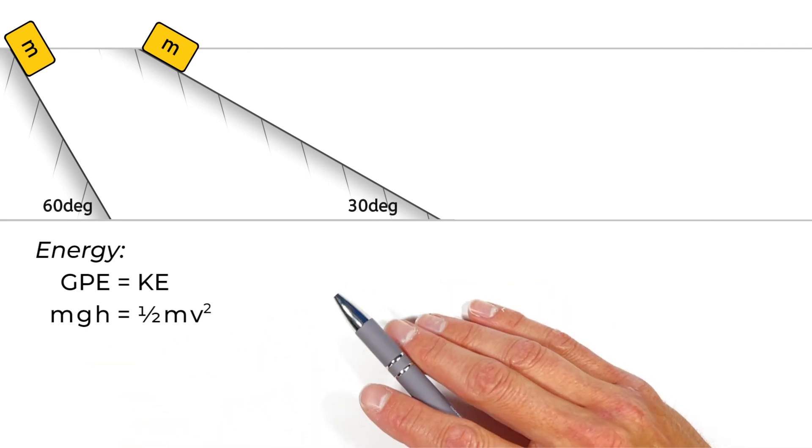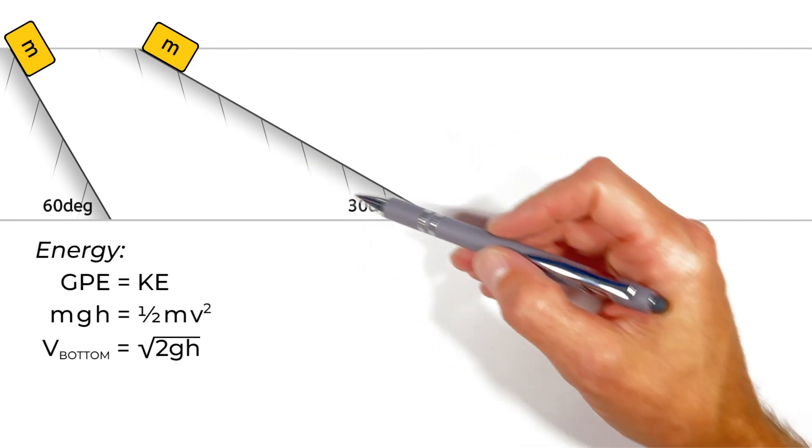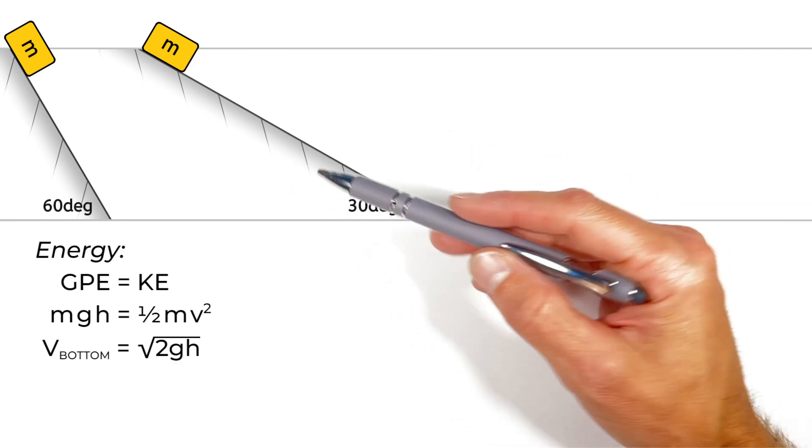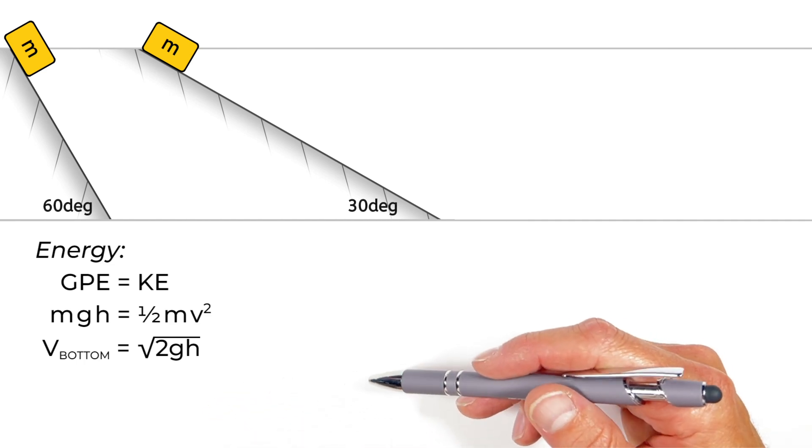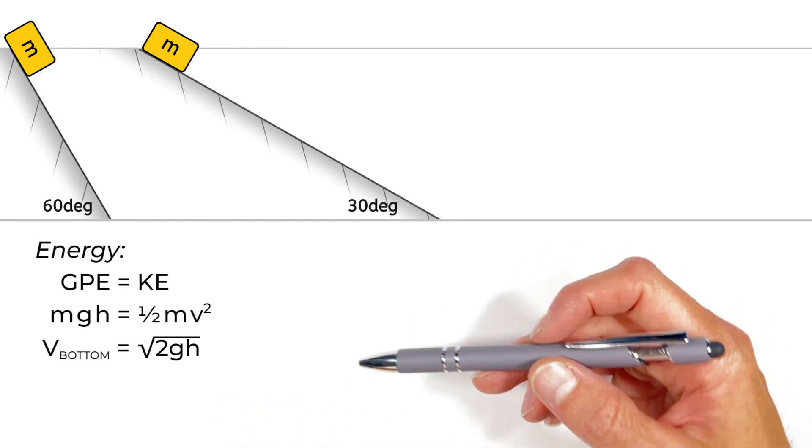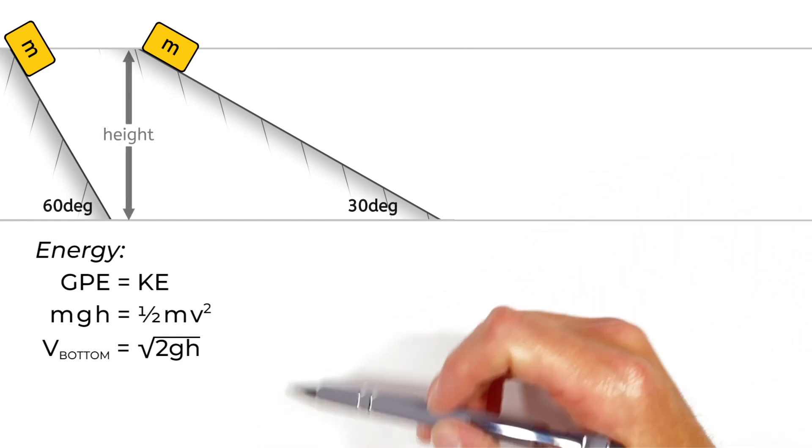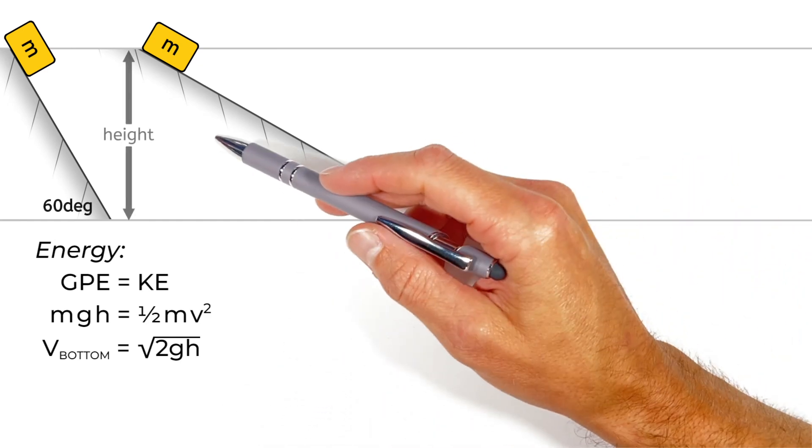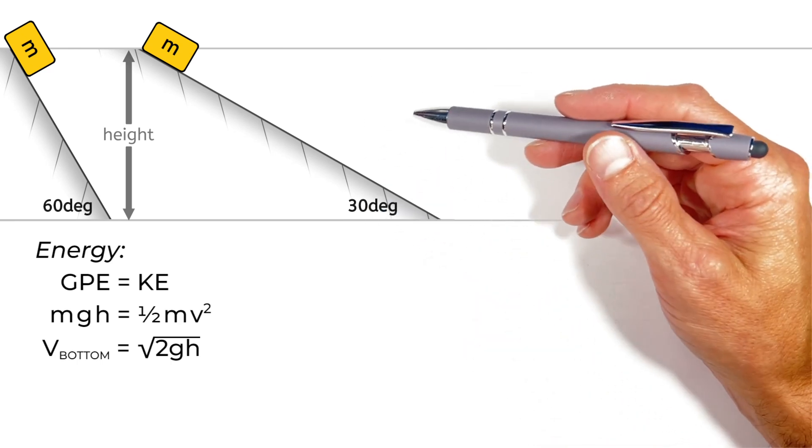But if you rearrange these equations and solve for the velocity at the bottom of the hill, you find that the block, when it reaches the bottom of the hill, is going to be traveling at a velocity which is equal to the square root of 2gh, where g is the acceleration due to gravity and h is the height of the hill. And you'll notice this solution doesn't take into account how steep the hill is or the angle of the hill at all. It's only the height that matters.